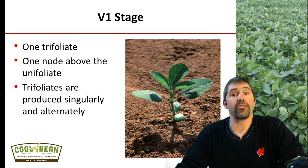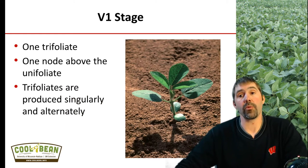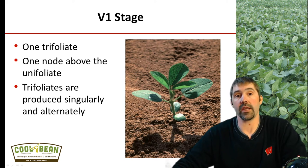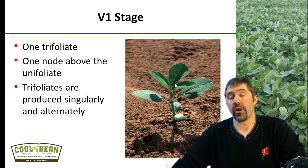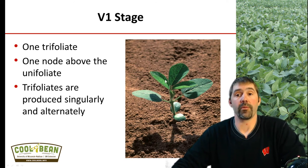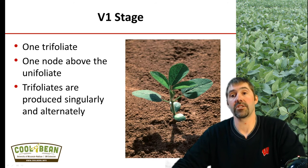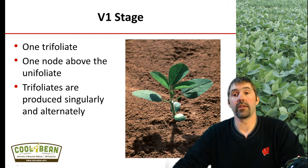Now, once we get into the V1 stage, this is when we identify the first trifoliate. This is when we have one node above the unifoliate leaves, and this is where the trifoliates are produced from this point forward. It's a trifoliate because there are three leaflets attached to that petiole that's attached to that node.